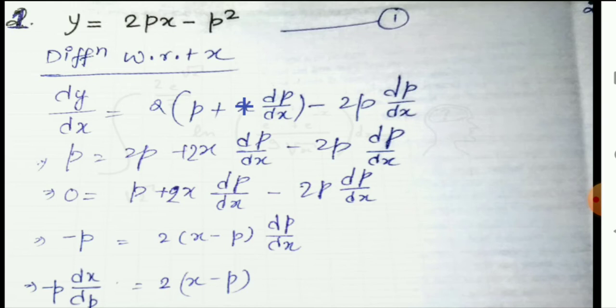For question 1, dy/dx = 2px. Using the product rule differentiation we get p + x·dp/dx − 2p·dp/dx. Putting the value of dy/dx = p and simplifying, we get 0 = p + 2x·dp/dx − 2p·dp/dx.